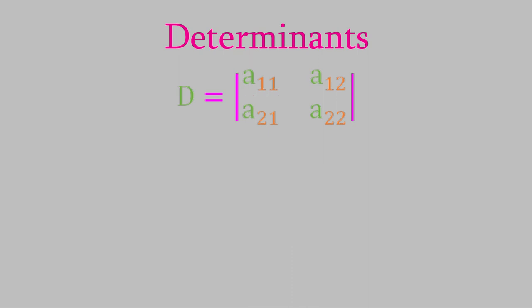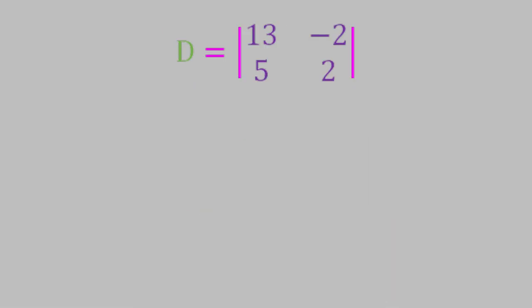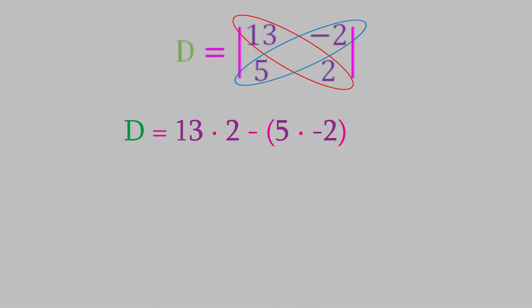If we use generic symbols, we usually put a subscript on the elements that shows the number of the row and column they're in, with the row first and then the column. To solve a 2x2 determinant, we multiply the two elements on one diagonal and then subtract the product of the elements on the other diagonal. For example, we find that this determinant is equal to 36. It's very common for elements in a determinant to be negative numbers, so you'll need to be careful about signs.